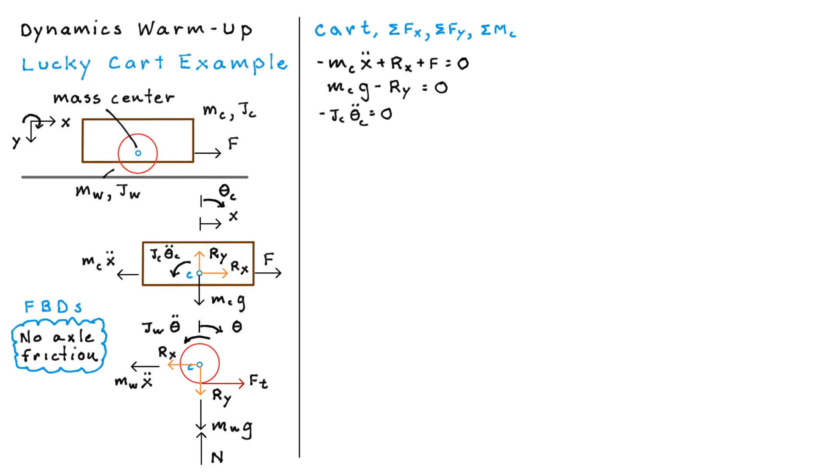Then we can do sort of the easiest one for it, which is the rotation. And here we're starting to reveal what's actually happening. Because JC theta C double dot is zero, we now know that the cart isn't rotating. But we'll get into those sorts of analyses in just a minute.